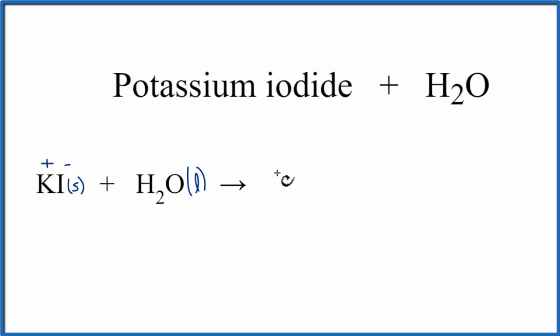So we can write K plus, that's the potassium cation, plus I minus, which is the iodide anion.